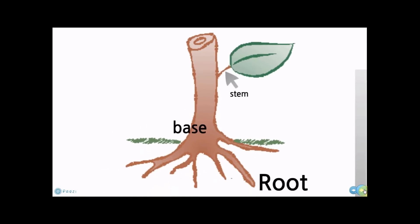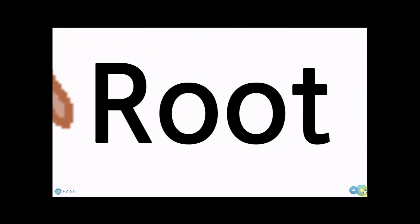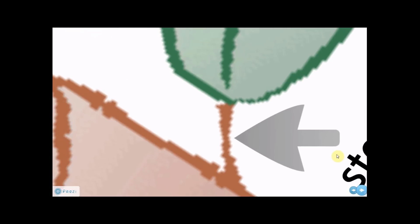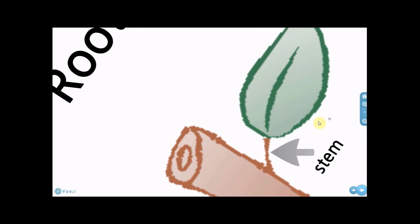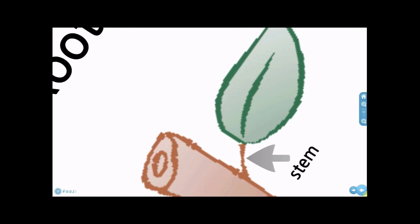Much like a plant has a root, something under the ground you can't see, a base, the first part of a plant you can see, and a stem, which can lead to flowers or leaves.